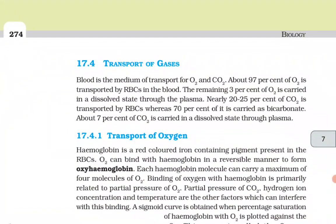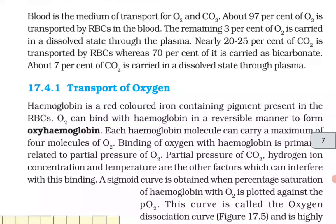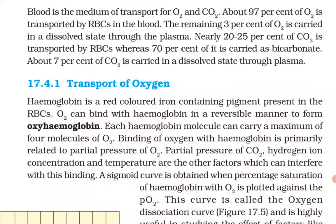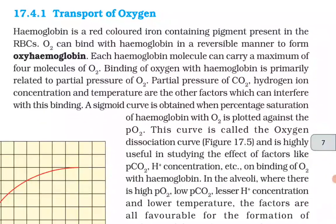17.4 Transport of Gases. Blood is the medium of transport for O2 and CO2. About 97 percent of O2 is transported by RBCs in the blood; the remaining 3 percent is carried in a dissolved state through the plasma. Nearly 20 to 25 percent of CO2 is transported by RBCs, whereas 70 percent of it is carried as bicarbonates. About 7 percent of CO2 is carried in a dissolved state through plasma.